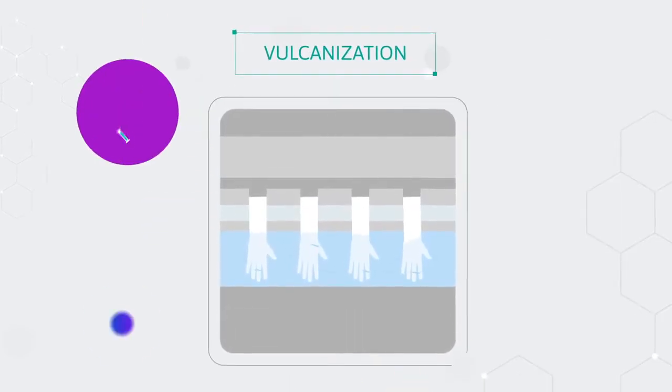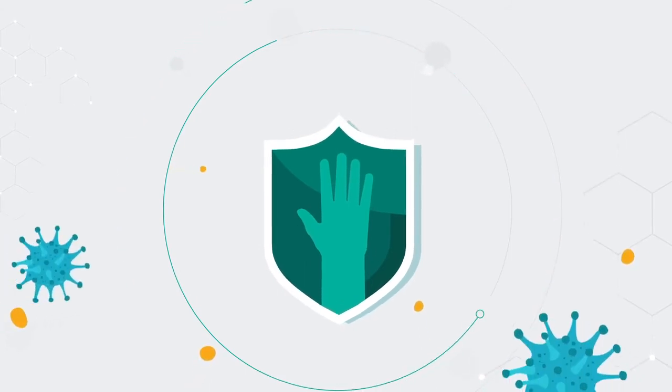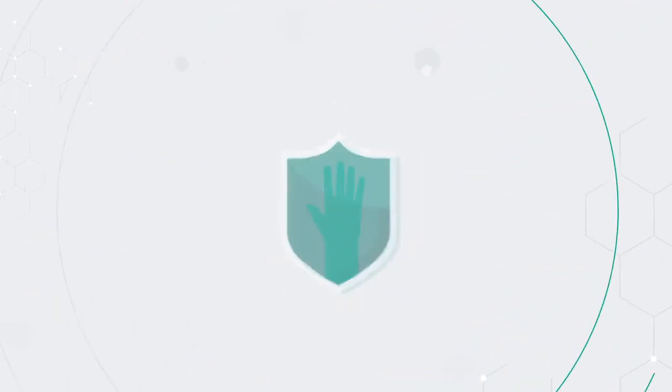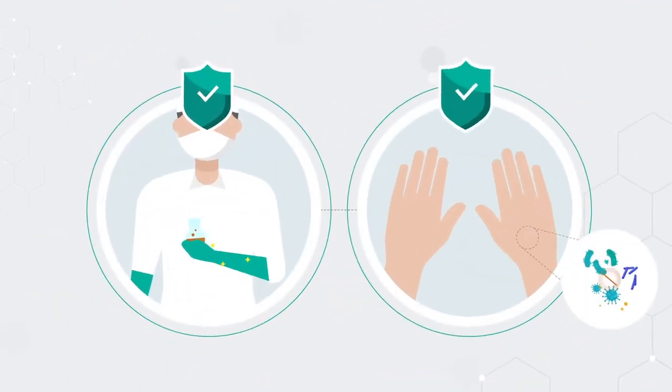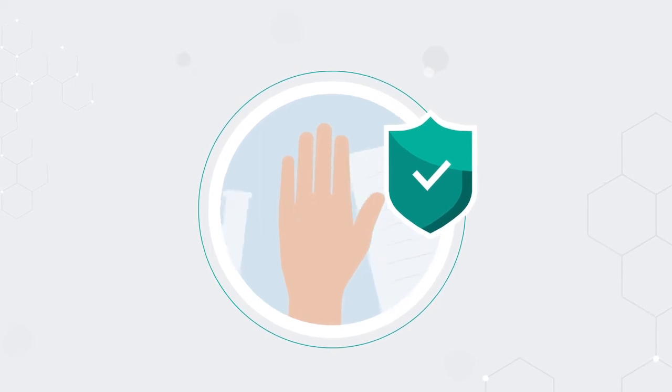Proper vulcanization, without the use of any chemical accelerators, can strengthen the material without using chemical accelerators. This allows for a cleaner, more skin-friendly product, and the best possible solution when you need the barrier protection of a glove and healthy skin for your sensitive hands.